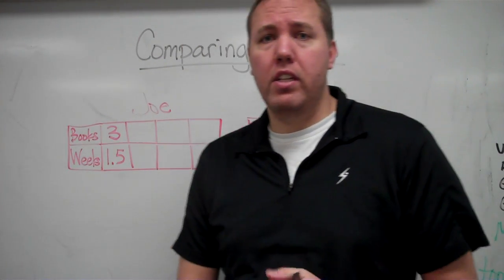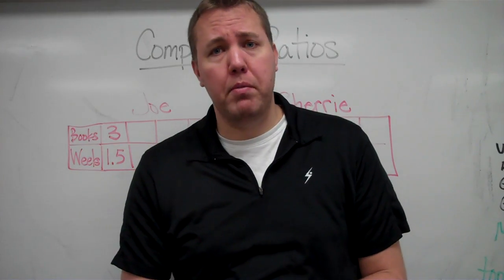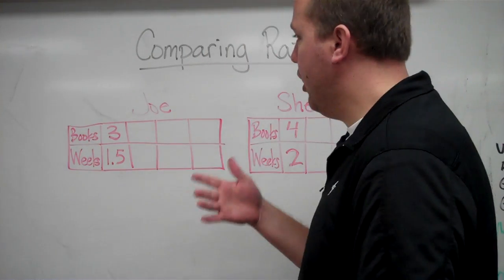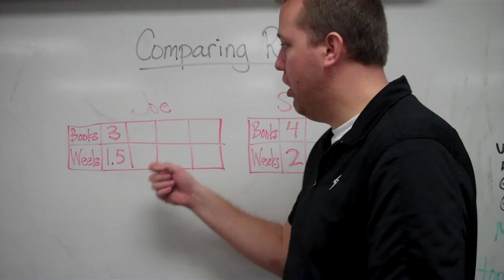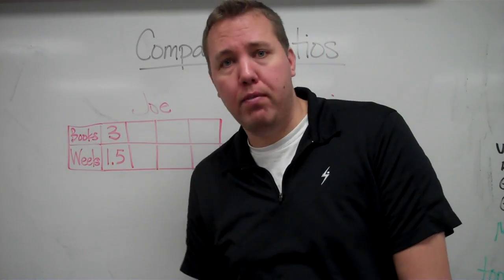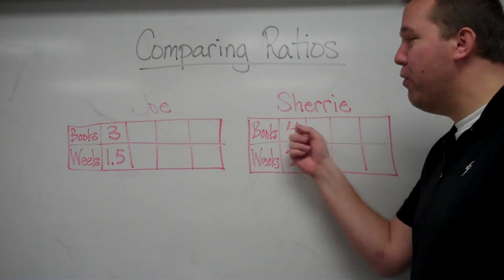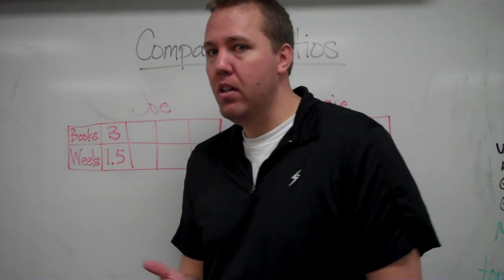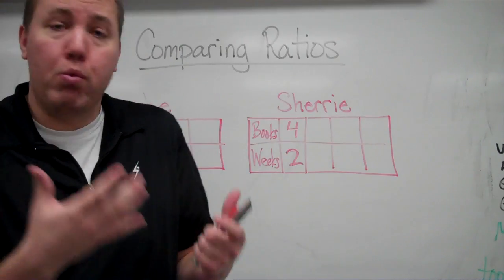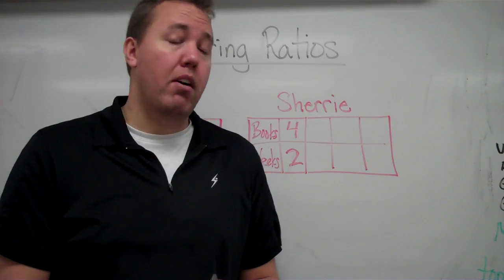Joe and Sherry are trying to see who's going to win the battle to read the most books. At the rate that Joe's going, he's reading three books every one and a half weeks. Sherry, on the other hand, is reading four books every two weeks. That's the rate that they've figured out.